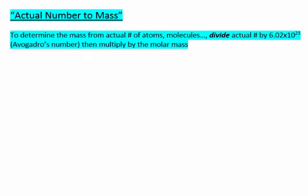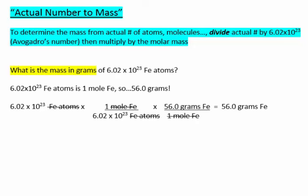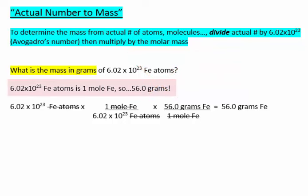Now I'll show you how to calculate the actual number of atoms or molecules to the weight or mass of that quantity. Essentially, first you determine the weight of the actual number of atoms or molecules given, divide by Avogadro's number to get moles, then multiply that mole number by the molar mass. For example, what is the mass in grams of 6.02 times 10 to the 23rd iron atoms? 6.02 times 10 to the 23rd is 1 mole of iron, and the weight of 1 mole of iron is 56 grams, which is the molar mass.